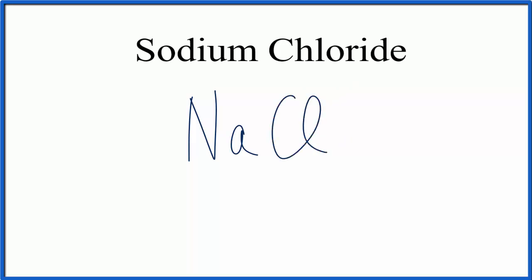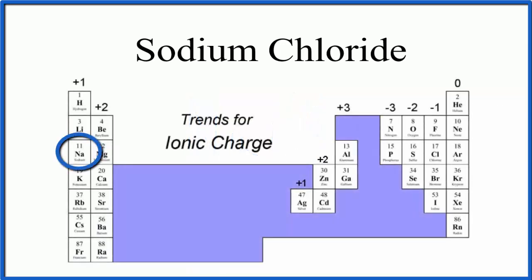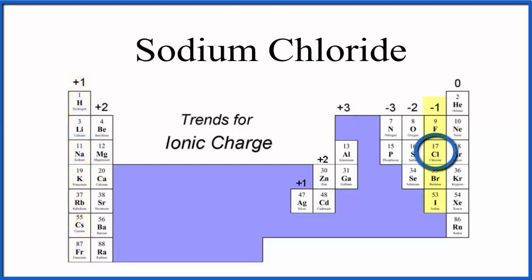And then we need to find the charges. So we look on the periodic table again, we can see sodium in group one there, that's a plus one charge, chlorine has a minus one charge.